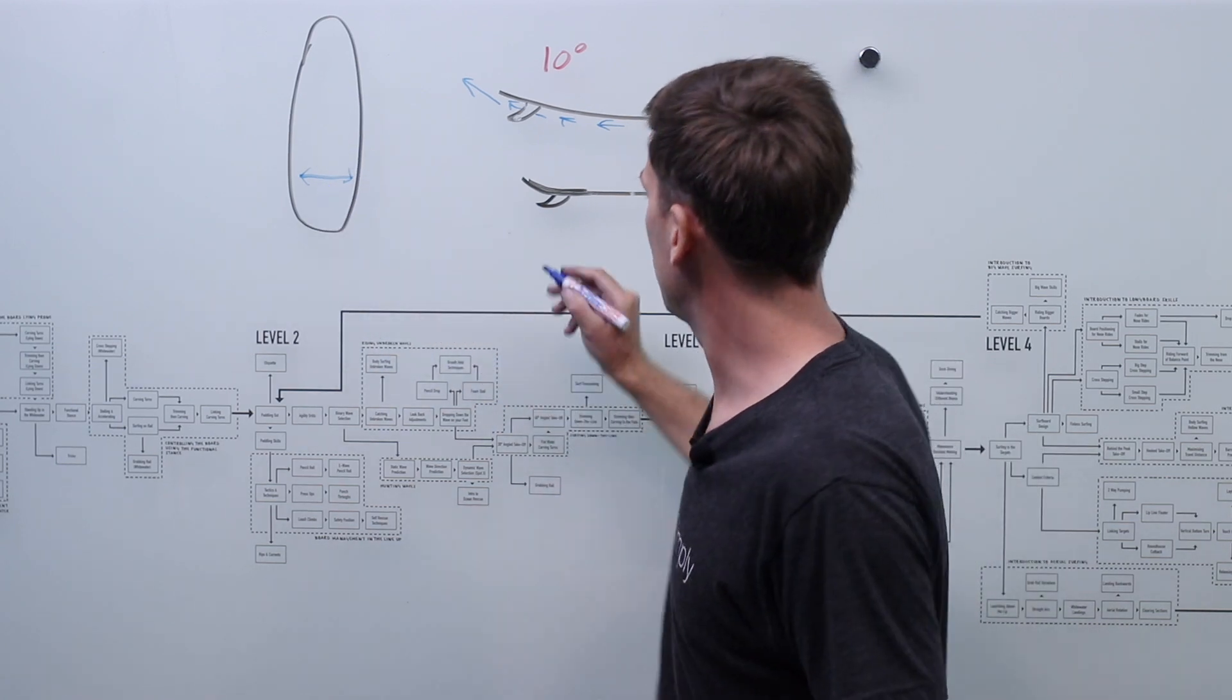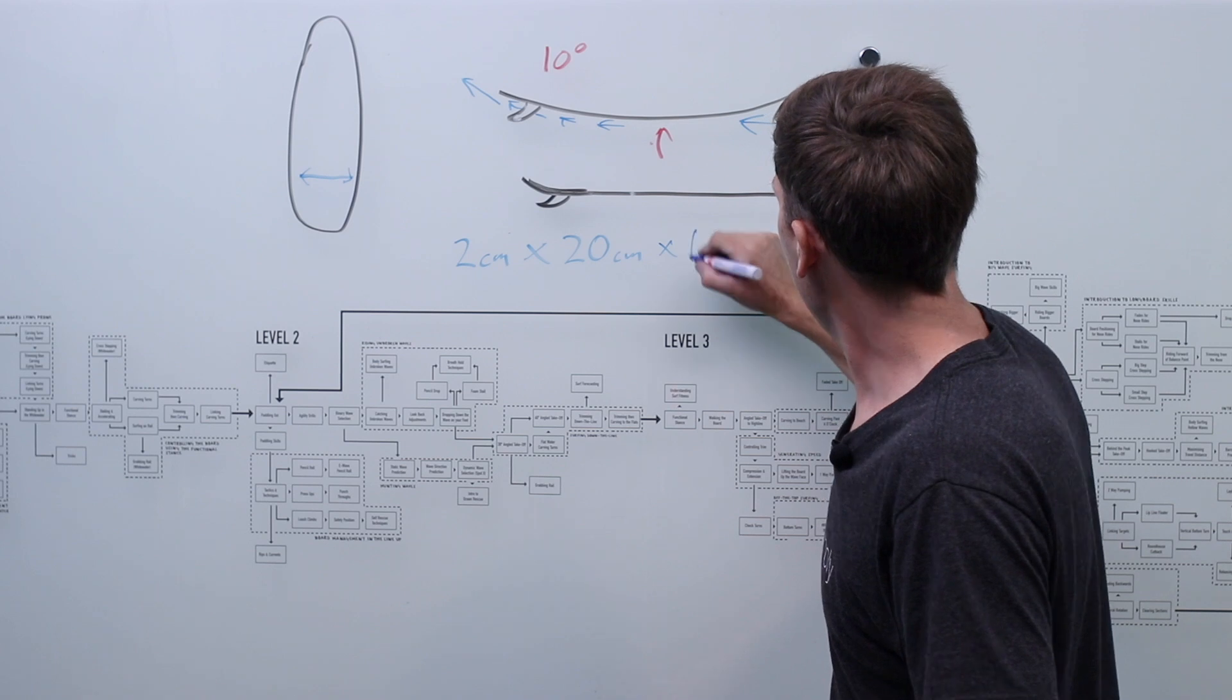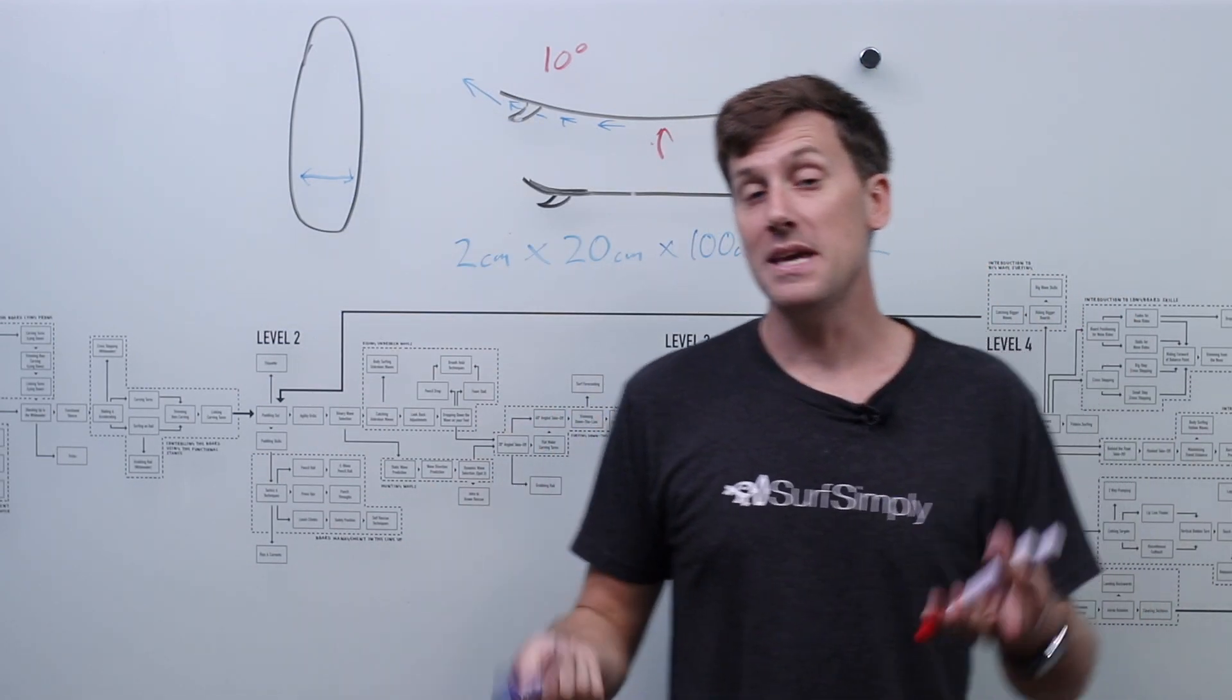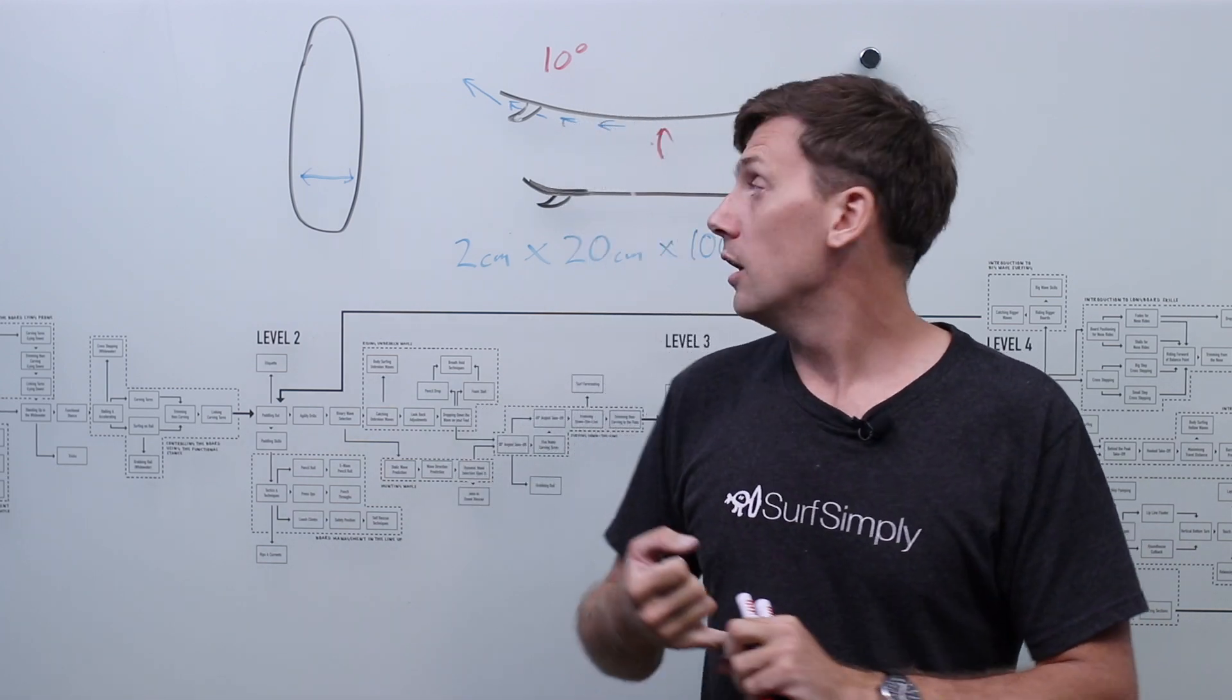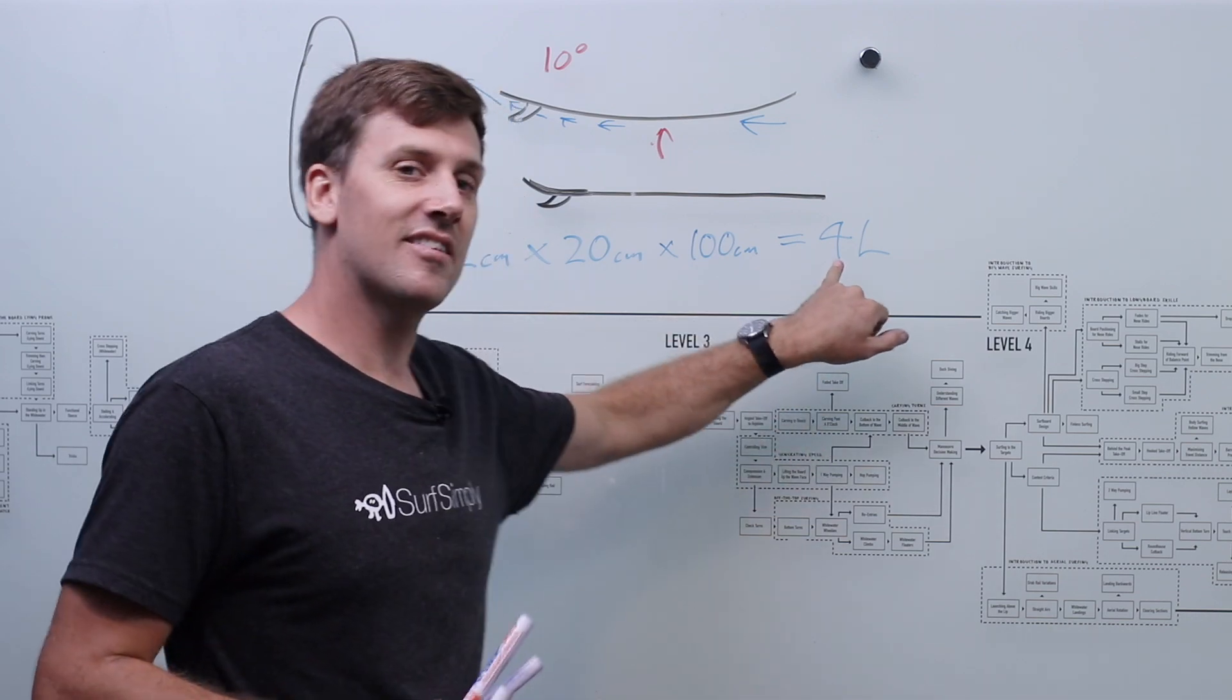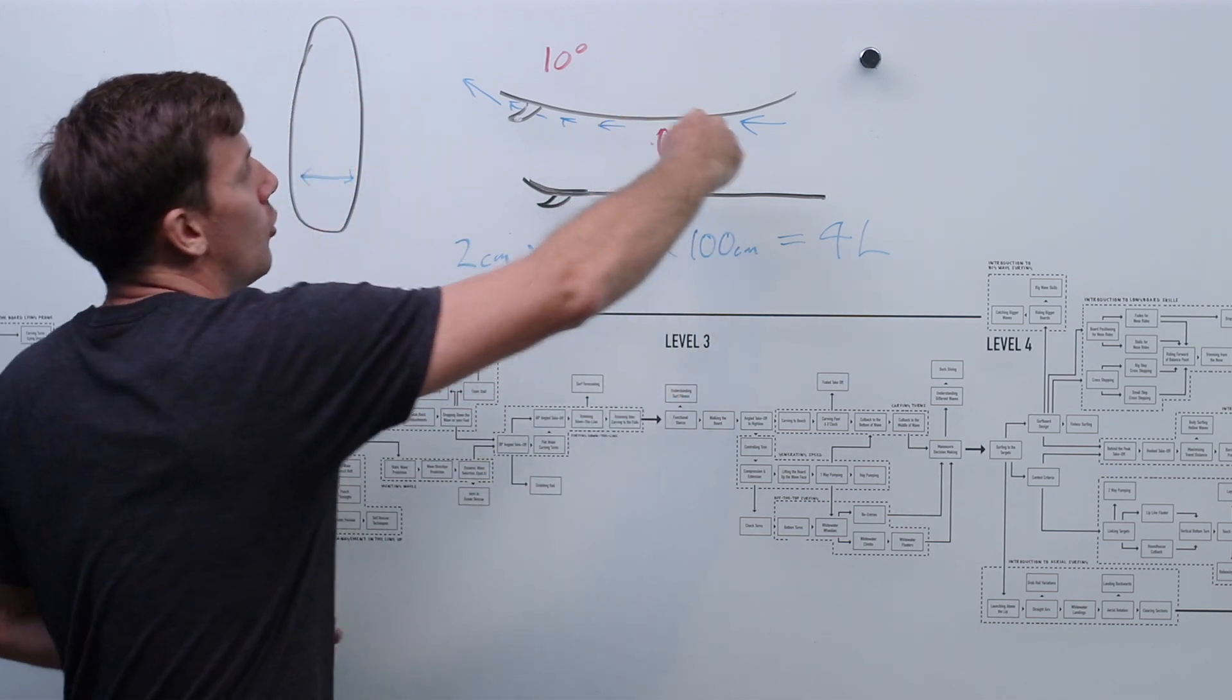So we've got two centimeters thick by 20 centimeters across and then I just want to think about one meter's length of the surfboard. You'll see why in a second but if we times that by 100 centimeters one meter we end up with a volume of four liters of water. Now the reason why I want to talk about one meter length is that we can talk about surfboard speed as in meters per second and again we'll be conservative and we'll say four meters per second. At four meters per second that's about nine miles an hour that's 14 kilometers an hour that means we've got 16 liters, if we're doing four meters per second we've got 16 liters of water passing through the bottom of the board every second. Going back to our previous equation that's going to be about 16 kilograms of weight of water running along the bottom of the board and being pointed upwards at 10 degrees.